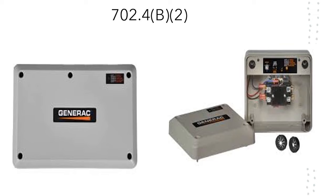When you get into part two, it talks about automatic transfer equipment. The generator is supposed to match whatever load you calculate per Article 220. Simply put, you're supposed to be able to handle the entire load of that system all at one time if you have an automatic transfer switch. If you have a 200 amp main and you didn't want to do the load calculation, you'd have to size it at a 200 amp main — which is not practical or cost-effective.